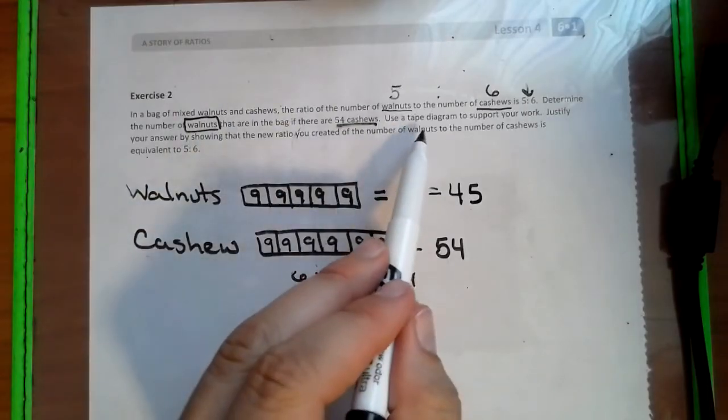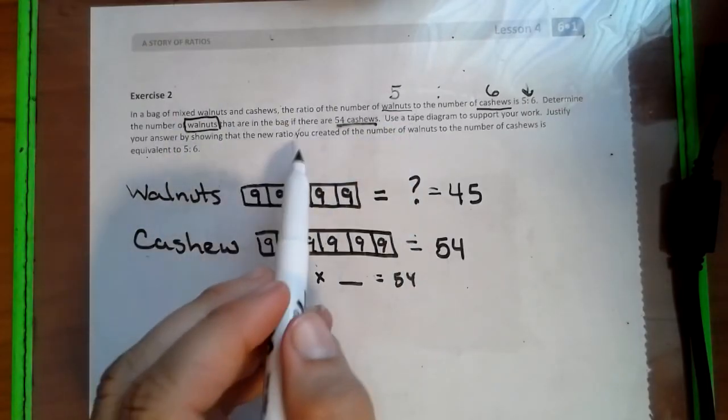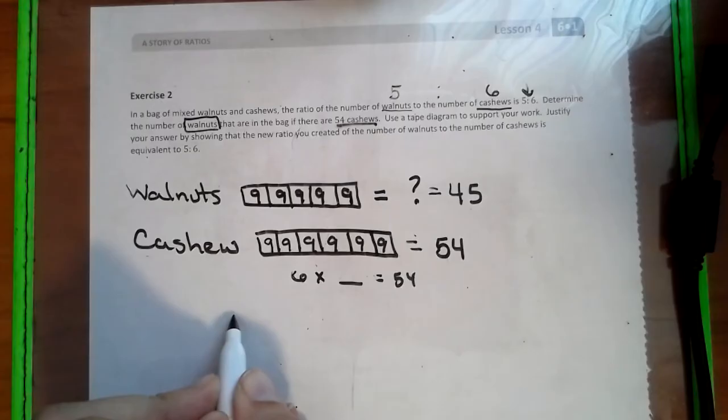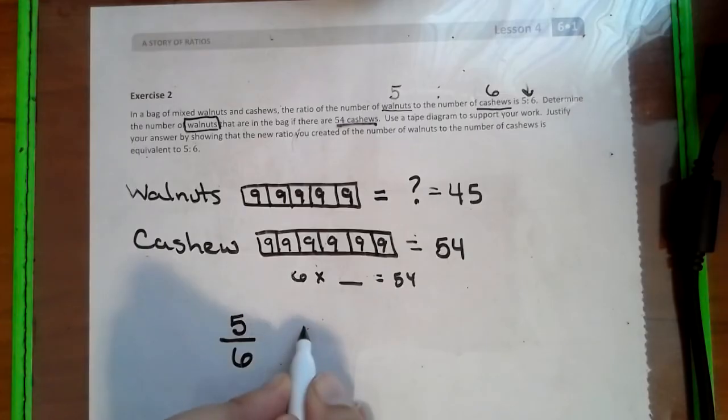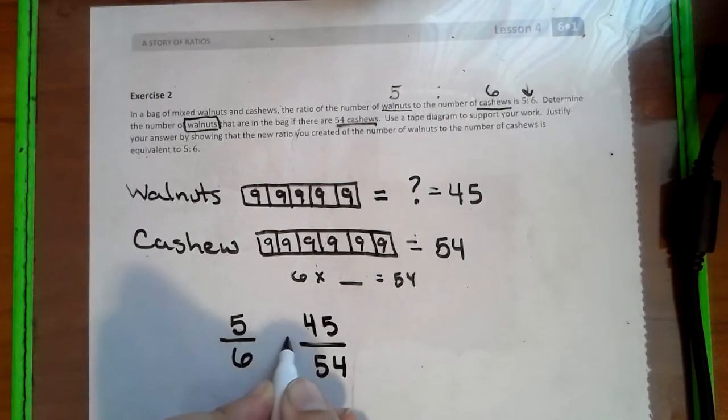Now, we showed that with the tape diagram. So now we have to show that with the new ratio. So our original ratio was 5 to 6. And now we're going to make our next ratio into 45 to 54. And we need to see if these are actually equal.